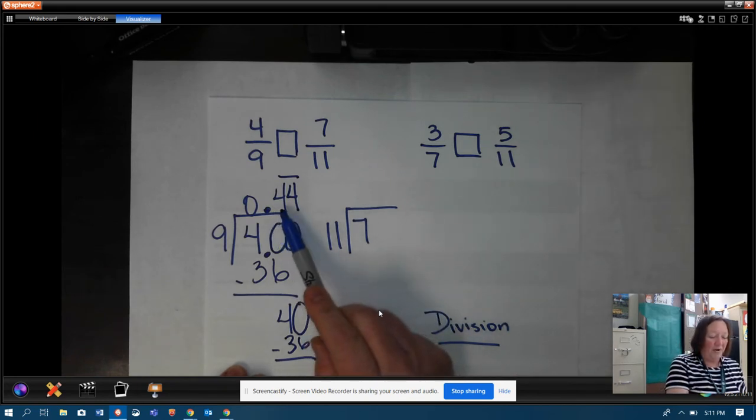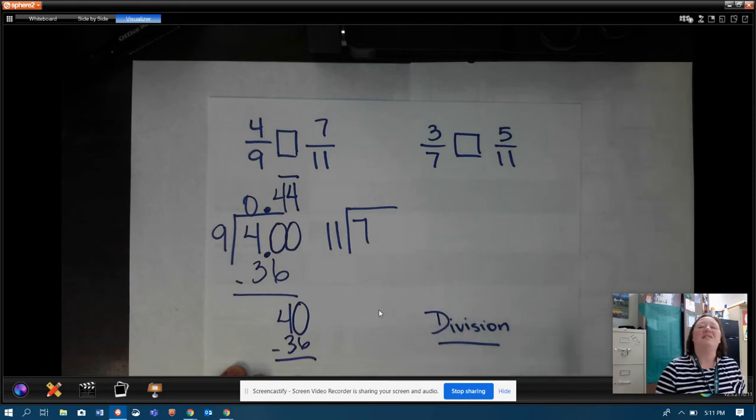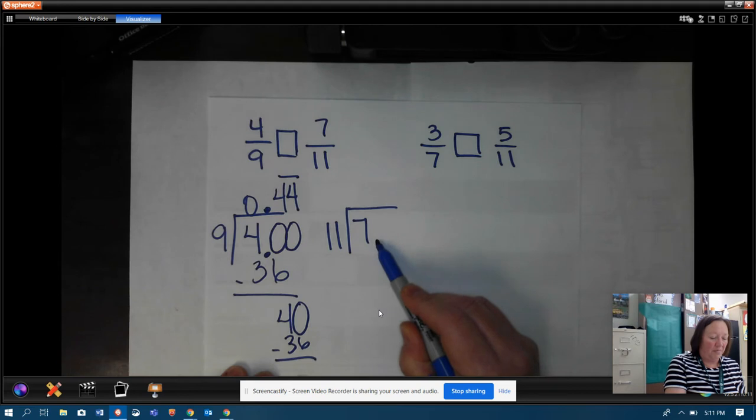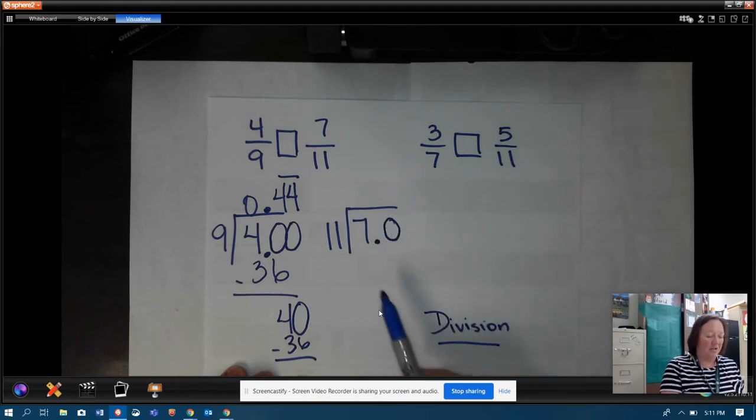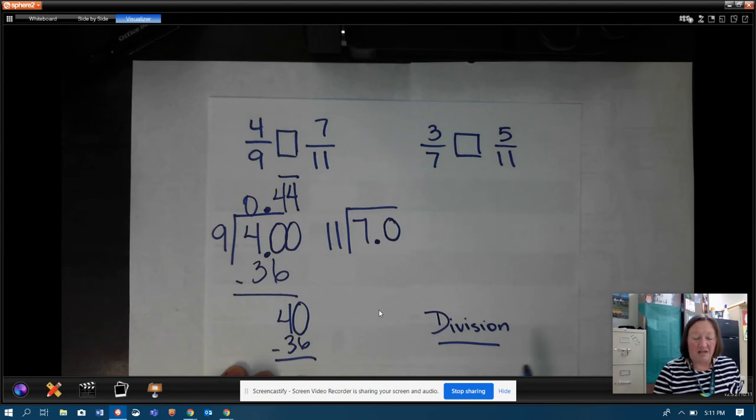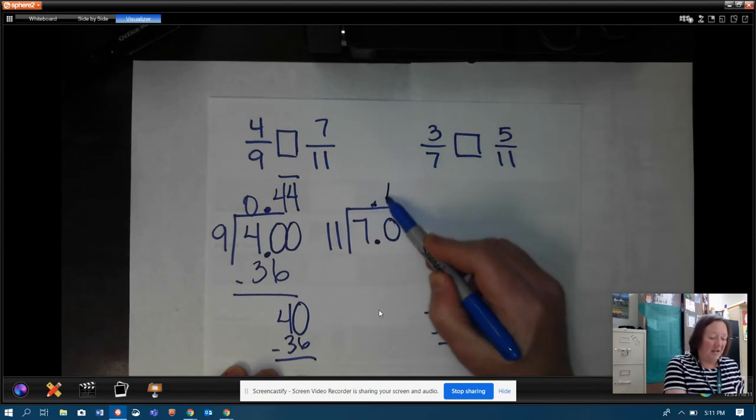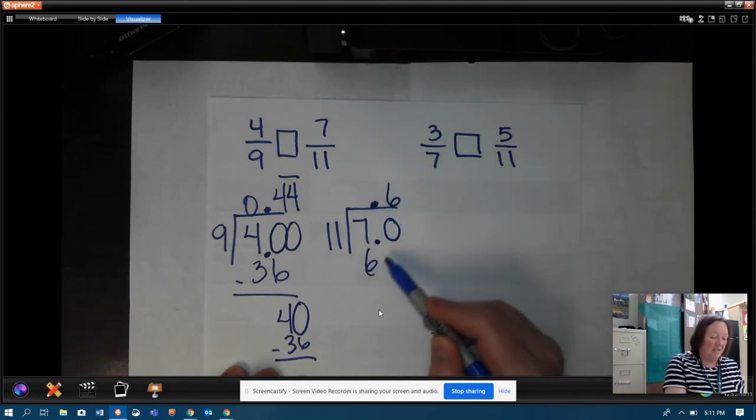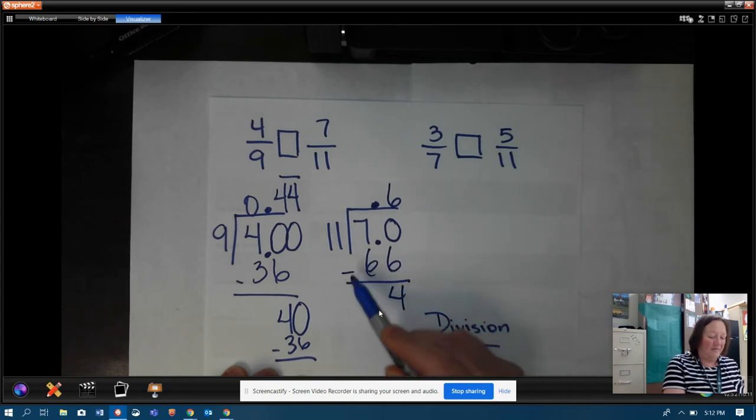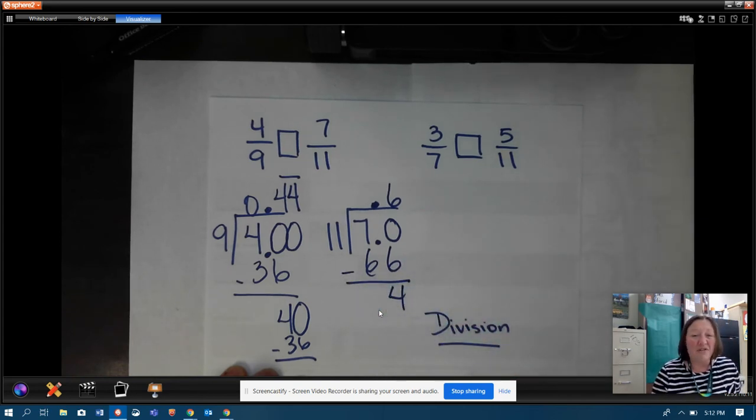Right? Okay, so I have 0.44. I need to know what this is to see if I can compare it. So eleven doesn't go into seven, but we're going to put a decimal and a zero. And we're going to say how many times does eleven go into seventy? Well, I know eleven times six is sixty-six, right? With four left over. And guess what? I don't have to go any farther. If my goal is to compare these two numbers, then I'm set and ready to do it.